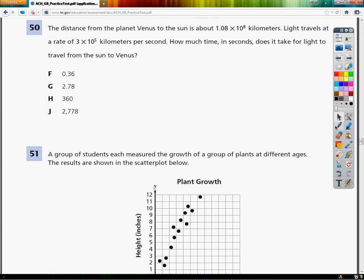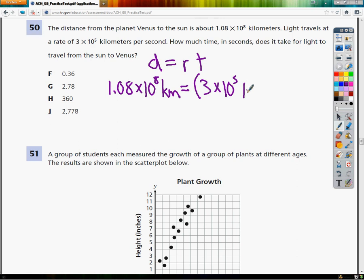Well, if you know that the formula for distance is rate times time, this becomes very easy. So I just do the distance is 1.08 times 10 to the 8th kilometers. My rate would be 3.0 times 10 to the 5th kilometers per second times X number of seconds.